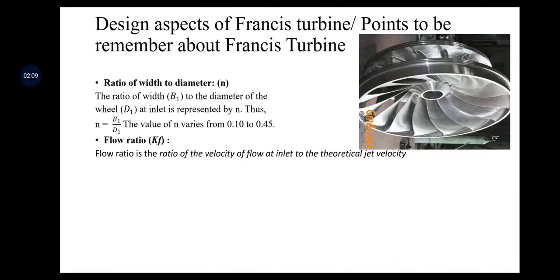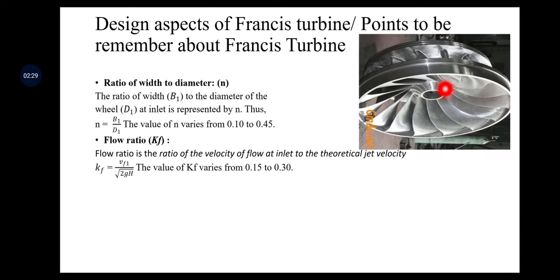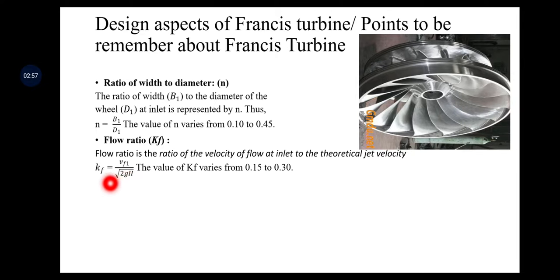The next parameter is the flow ratio, denoted by Kf. Flow ratio is the ratio of the velocity of flow at inlet to the theoretical velocity of the jet. While water is directed by guide vanes toward the actual vanes mounted on the runner, the velocity of flow divided by the theoretical jet velocity — which is √(2gH) — gives the flow ratio Kf, whose value ranges between 0.15 to 0.30.